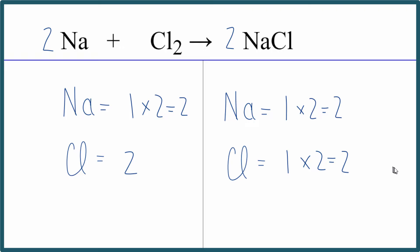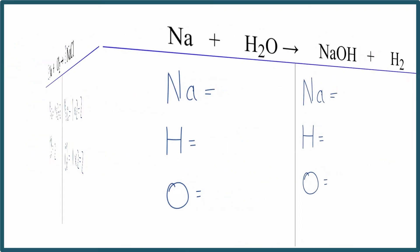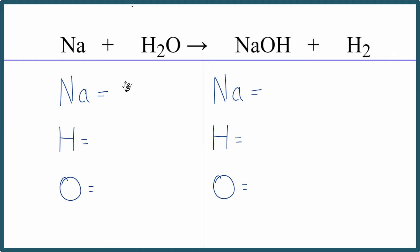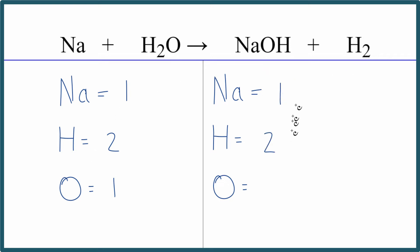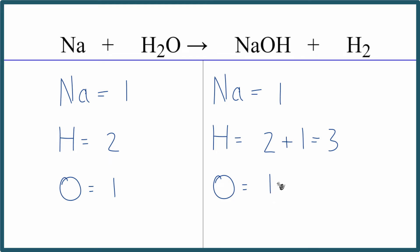Let's look at another one that gives people a bit of trouble. We have one sodium, two hydrogens, and one oxygen on the reactant side. On the products we have one sodium, two hydrogens plus one more hydrogen here — so a total of three hydrogen atoms. Often people count one and forget the others, so make sure you count all of the hydrogens.